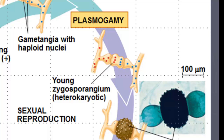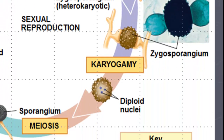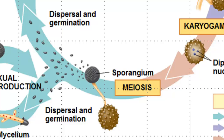A zygosporangium forms, which will contain several haploid nuclei from the two parents. The zygosporangium will develop a rough, thick-walled coating that can resist harsh conditions for months. The zygomycota could exist in this heterokaryotic stage for quite some time with the two nuclei being separate. When the conditions become favorable, karyogamy will take place — the nuclei will fuse, followed by meiosis. The zygosporangium could then germinate into sporangium, which then could produce spores, and those spores would develop into mycelia.